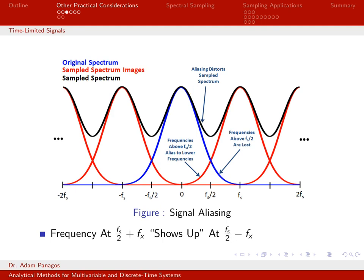We know what happens if I sample at a rate of fs. This original spectrum — the blue curve — gets shifted at increments of fs. So we get a copy at fs, a copy at minus fs, a copy at minus 2fs, plus 2fs — replications of the original spectrum at multiples of fs all up and down the frequency axis. The spectrum of the overall sampled signal is the sum of all of these curves, and when I add them up, I end up getting this black curve.